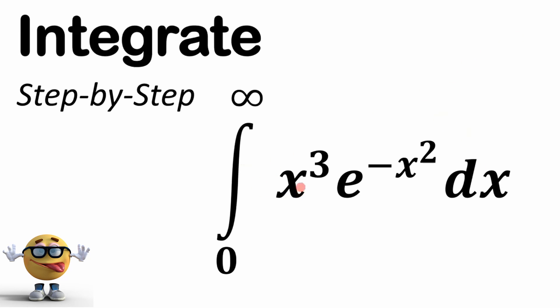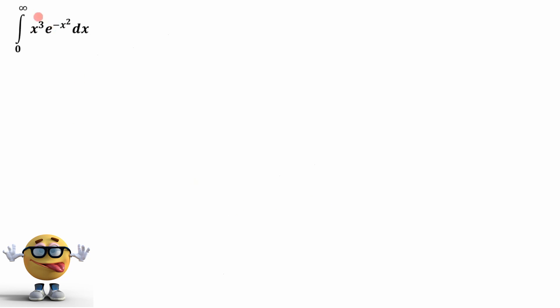My friends, we're going to integrate this function x cubed times e to the negative x squared. This is a Gaussian function from zero to infinity, and it's going to be awesome. And just note I got many modifications of this integral if you want to check those out.